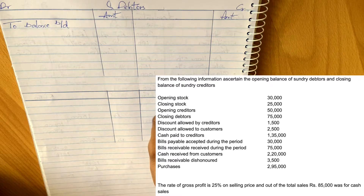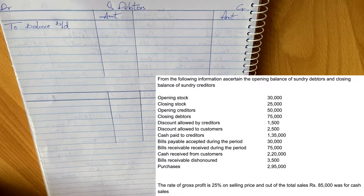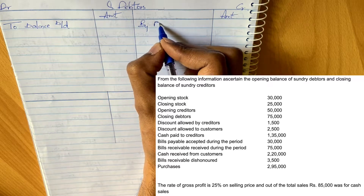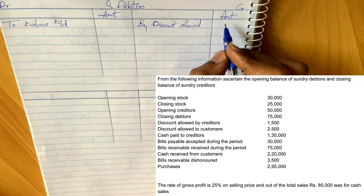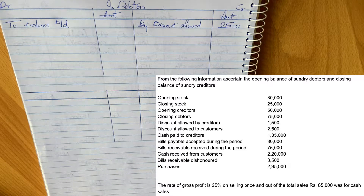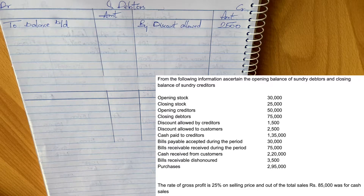Now look at discount allowed to customers. Since debtors account has a debit balance, to reduce it we show entries on the credit side. The journal entry is: debit discount, credit debtors. Discount is an expense — debit all expenses — and since debtors has a debit balance, to reduce it we credit it. So we write 'by discount allowed' on the credit side: amount 2,500.